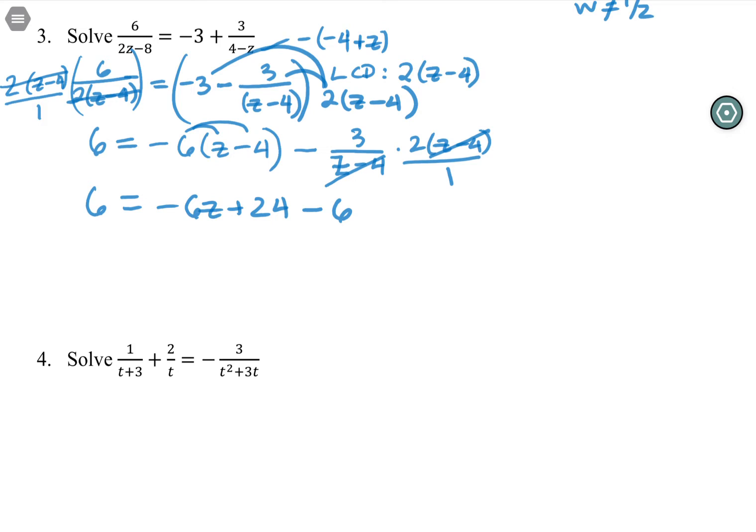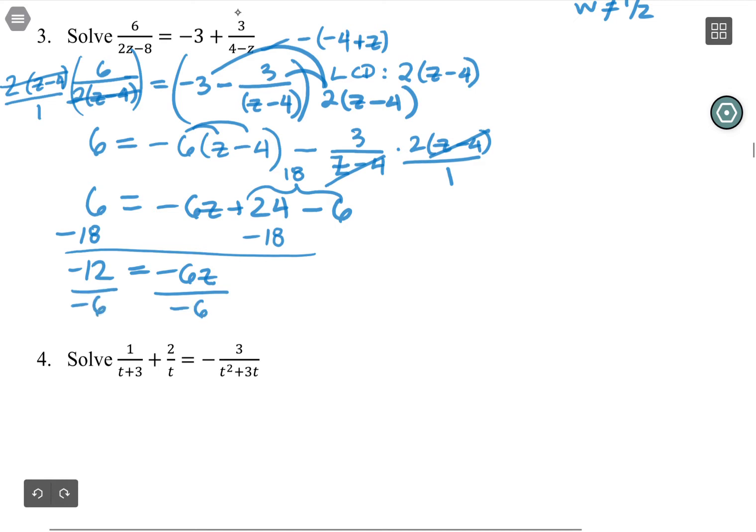I do have just one z left on the right hand side. So I'm going to go ahead and here, let's see, what is this? 24 minus six is 18. So I'm multiplying by negative six, I'm adding 18. Let's go ahead and get rid of the 18 first by subtracting. Six minus 18 is negative 12 equals negative six z. And I need to divide by negative six. And it looks like z is equal to positive two.